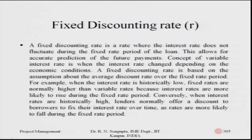A fixed discounting rate is based on the assumption about the average discounting rate over the fixed interest rate period. For example, when the interest rate is historically low, fixed rates are normally higher than variable rates. Conversely, when interest rates are historically high, lenders normally offer a discount to borrowers to fix the interest rate over the period.